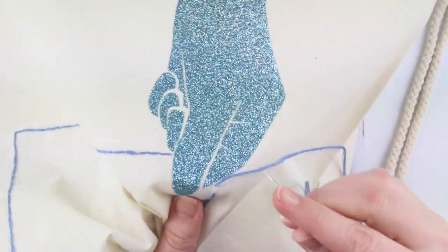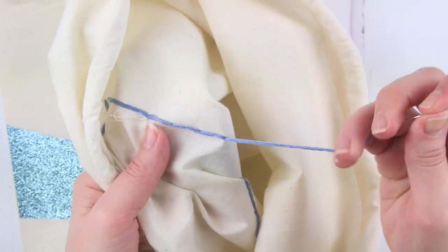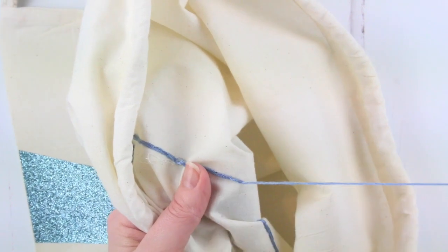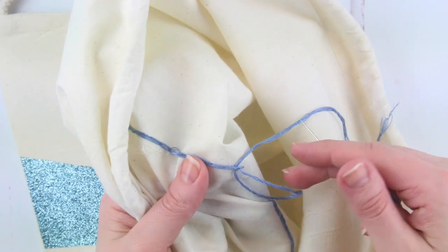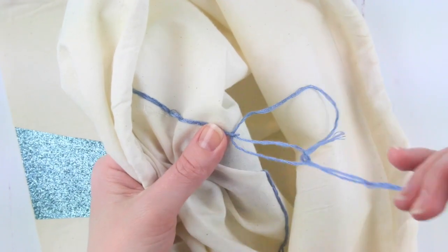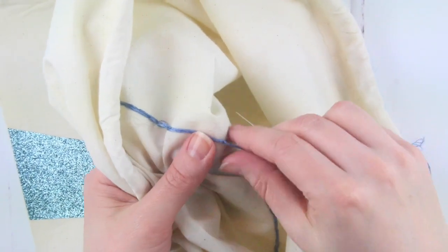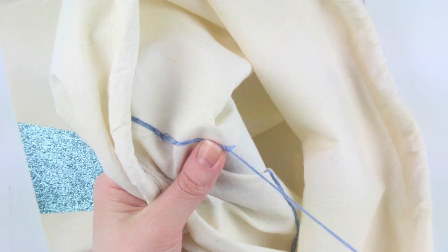When you get to the end, bring the needle through to the back and turn the fabric over. Sew the needle through the existing threads on the back to create a loop, then sew through the loop and tighten to tie a knot. Repeat and trim your thread.